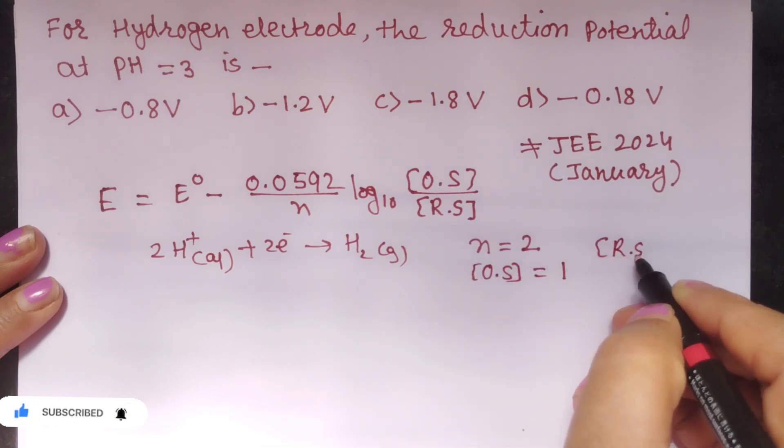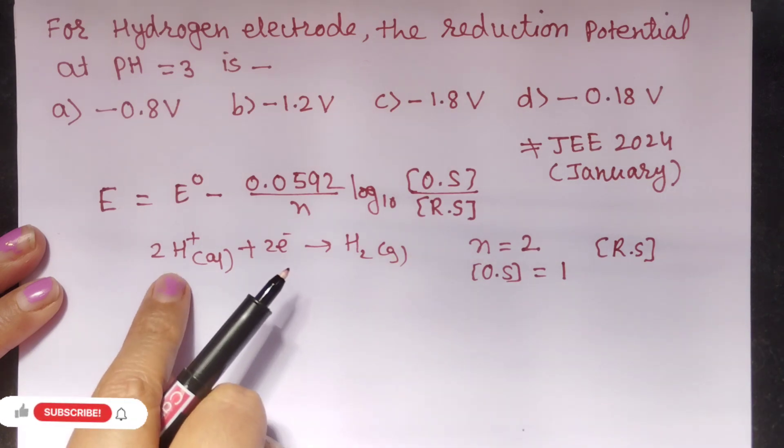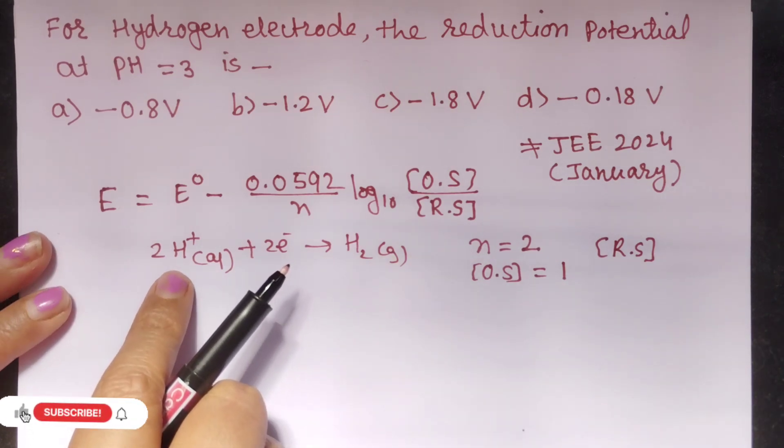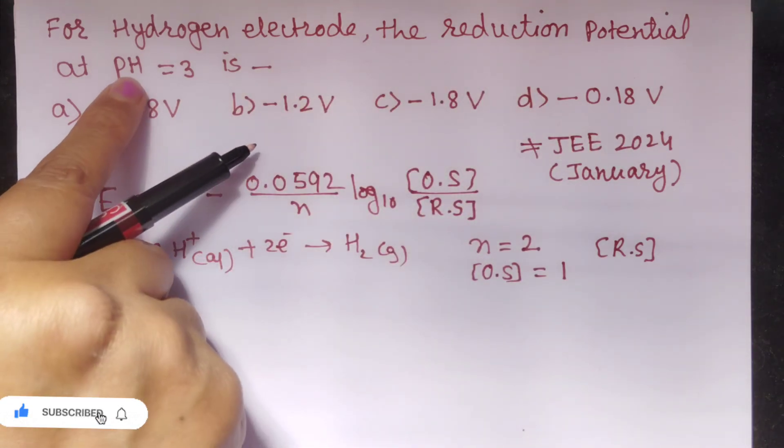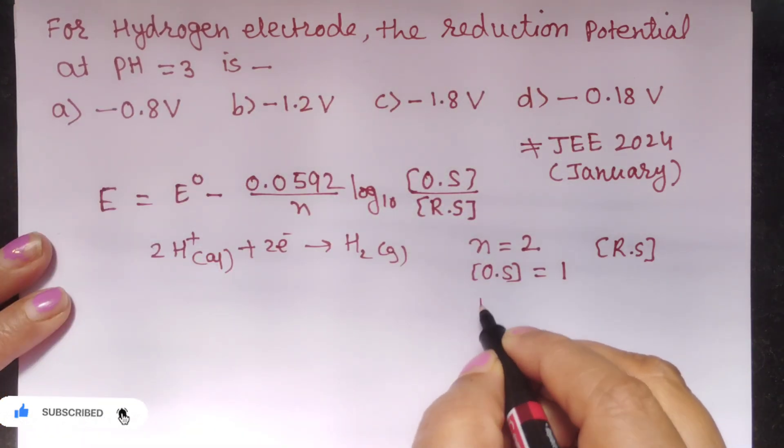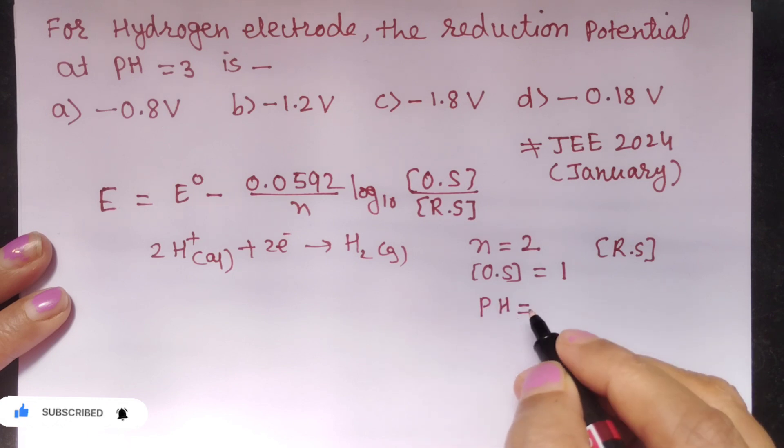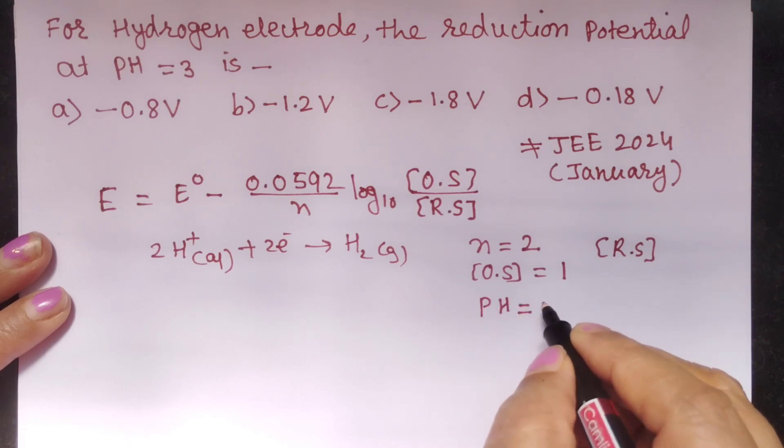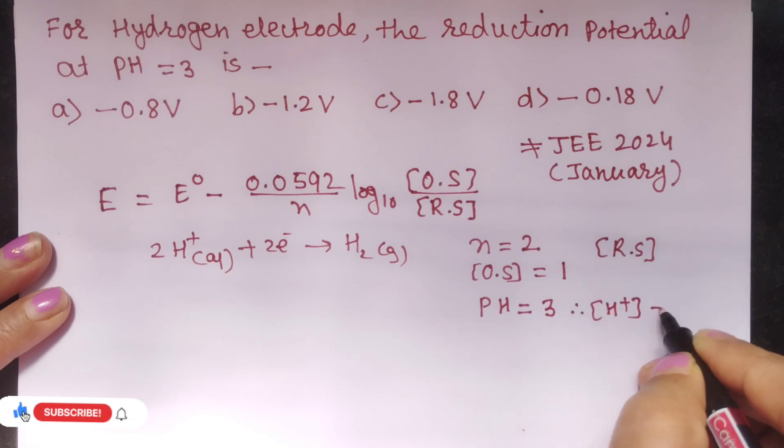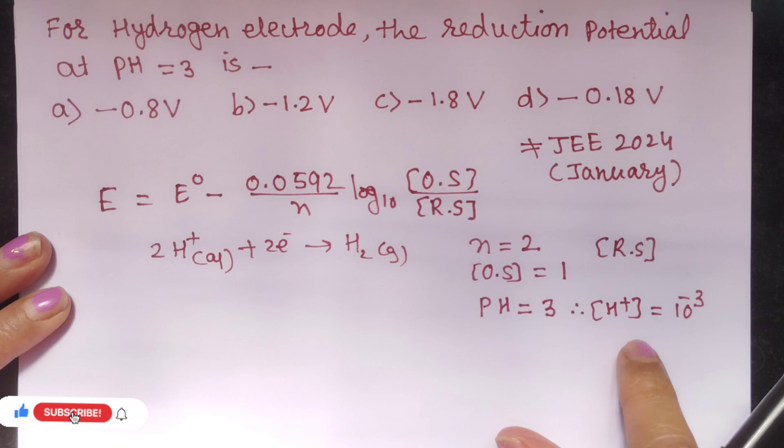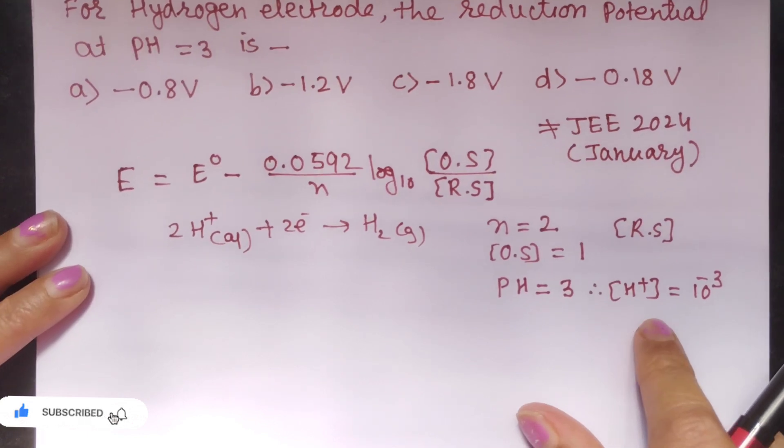Concentration of reduced state will be equal to the 2 moles of H+ ion. But in the question if you see H+ ion concentration is not given but it is given in the form of pH. So always pH you have to convert that to H+ ion concentration. So if pH is equal to 3 that H+ ion concentration will be 10 raise to minus 3 because pH is equal to negative log to the base 10 of H+ ion.